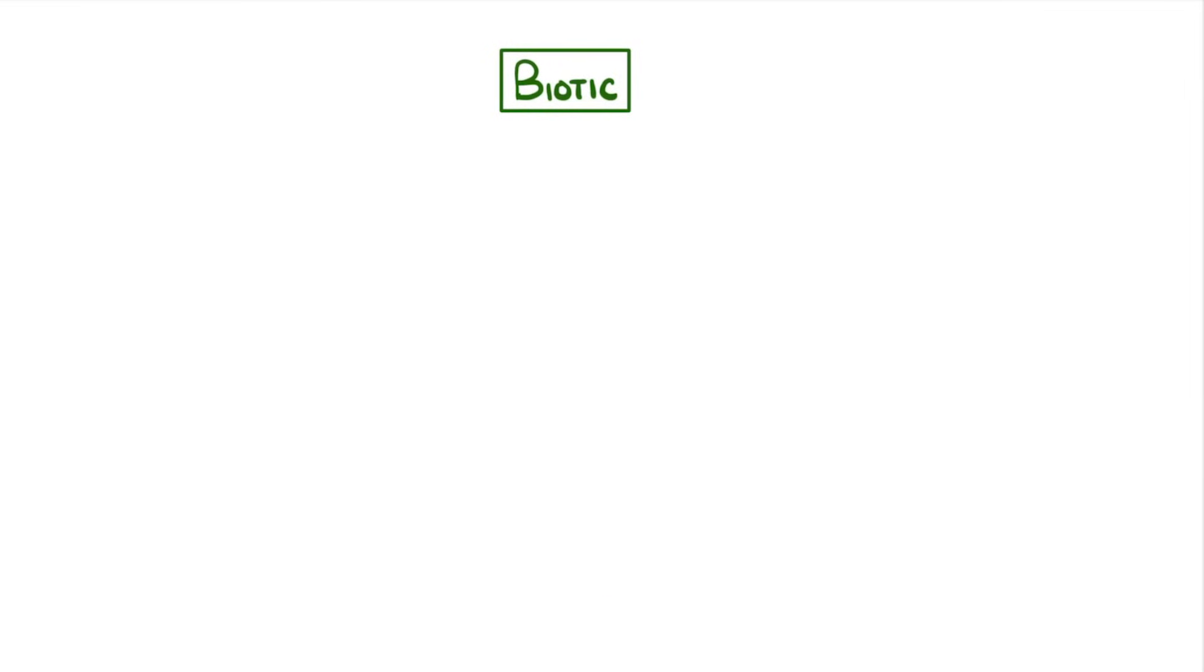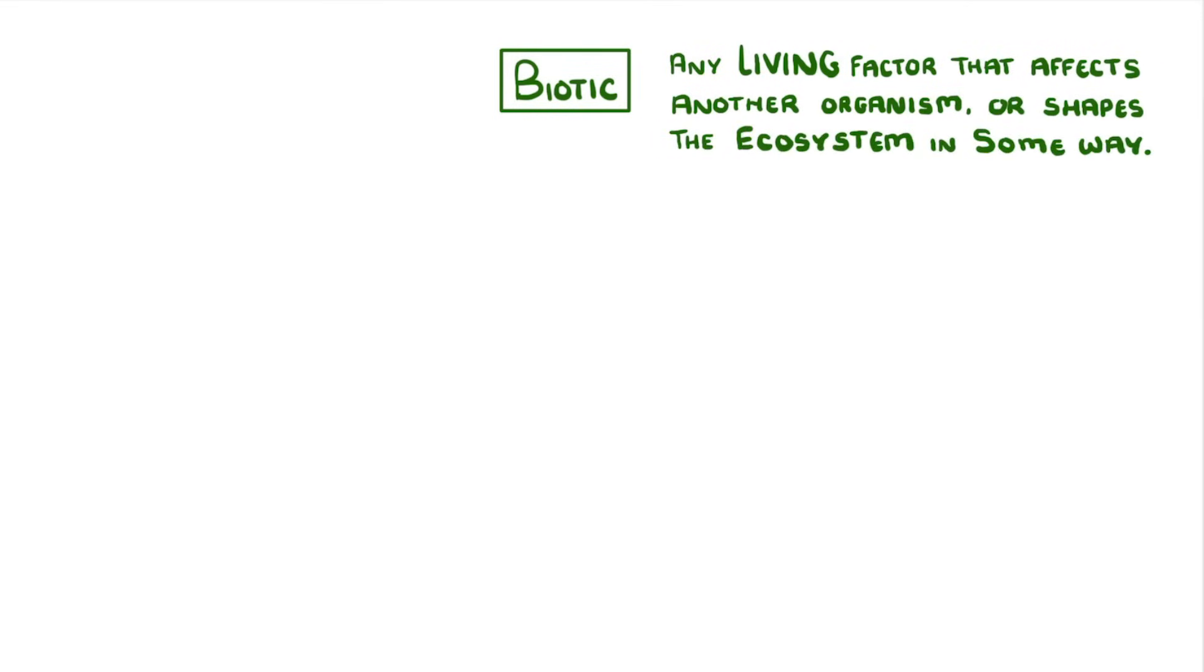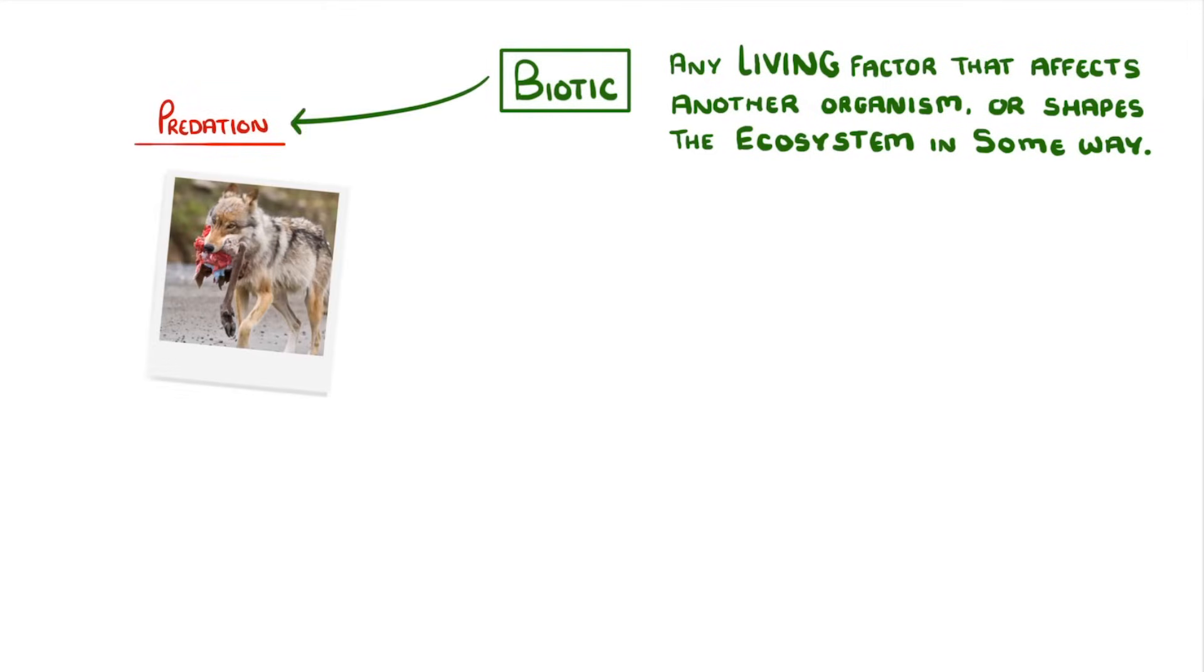We can describe biotic factors as any living factor that affects another organism or that shapes the ecosystem in some way. It's kind of hard to describe, but if you think of something like predation, we would class that as a biotic factor because it's a living process and it can influence the population of another species.